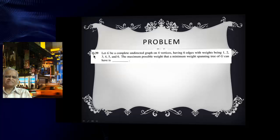Detailed problem, Question 39: G is a complete undirected graph K4. It has 6 edges. A complete graph K4 has 6 edges. The weights are 1, 2, 3, 4, 5, 6. We have to find out if I take a minimum spanning tree, what is the maximum possible weight a minimum spanning tree of the graph can have.